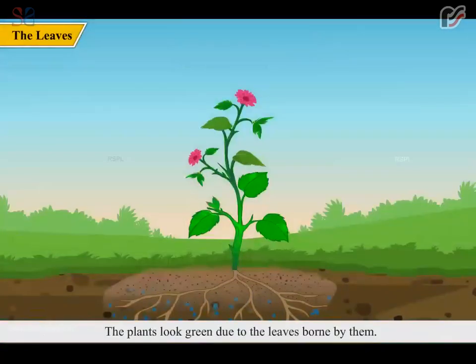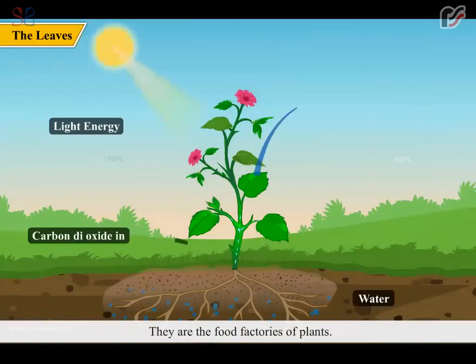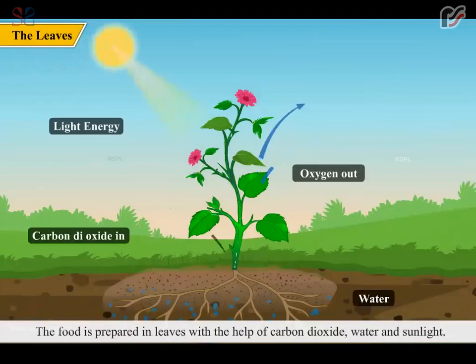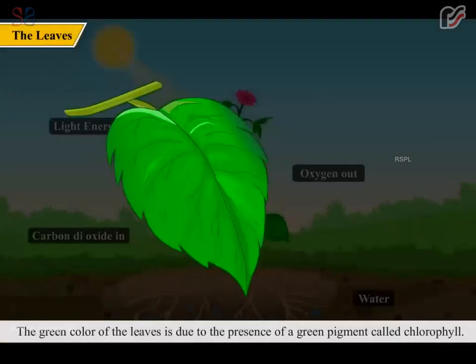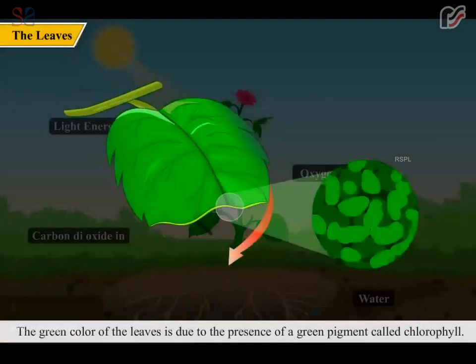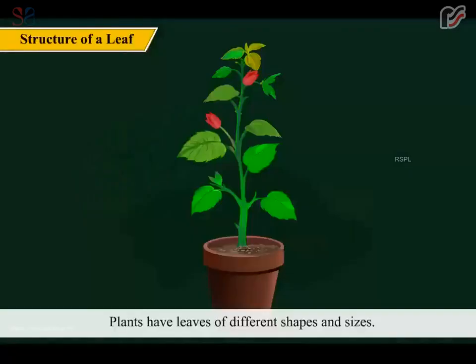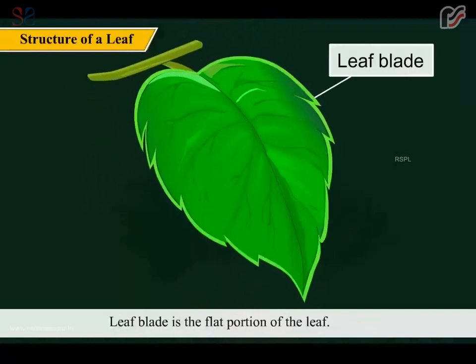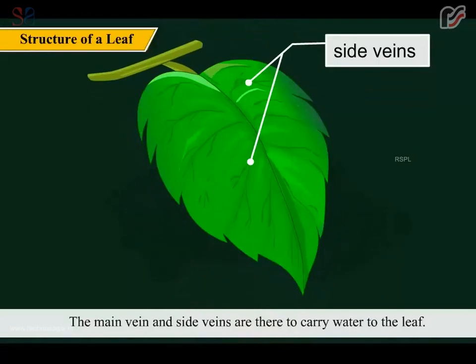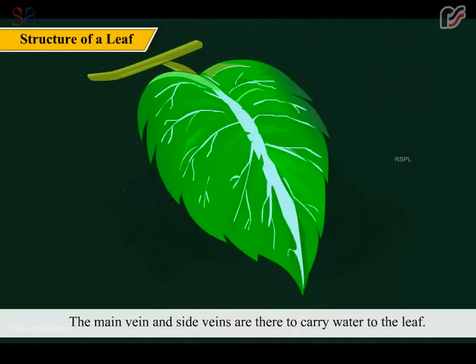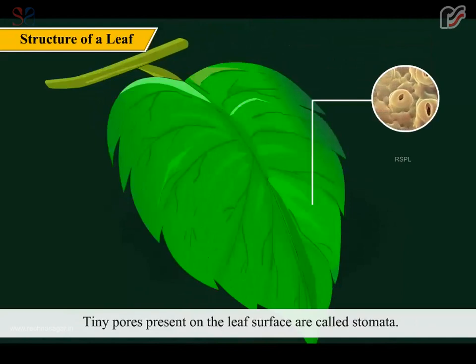The plants look green due to the leaves borne by them. They are the food factories of plants. The food is prepared in leaves with the help of carbon dioxide, water and sunlight. This process is called photosynthesis. The green color of the leaves is due to the presence of a green pigment called chlorophyll. Plants have leaves of different shapes and sizes. The leaf blade is the flat portion of the leaf. The main vein and side veins carry water to the leaf.